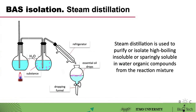Steam distillation is used when it is necessary to purify or isolate high-boiling organic compounds insoluble or sparingly soluble in water. It is the most common way to obtain essential oils, used when the raw material contains a relatively large amount of essential oil and the distillation temperature does not affect product quality. The boiling points of individual components of essential oils range from 150 to 350 degrees Celsius; however, in the presence of water vapor, all these substances are distilled at temperatures below 100 degrees Celsius.